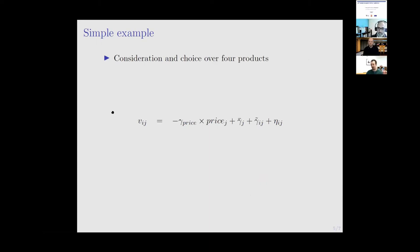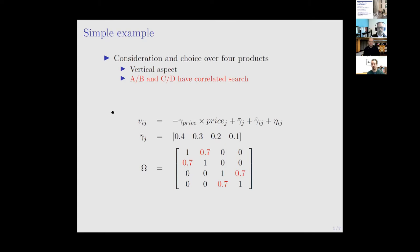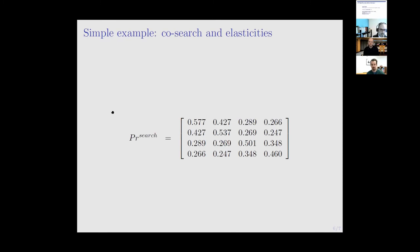I'll walk through a simple example to show the mechanics. I parameterize a four-product setting with no outside option, introducing a vertical aspect where the first product has a higher gamma-bar term, and correlation in search between products A and B and between products C and D but no other correlations. For the conditional choice part, I assume it only depends on price to keep things simple.